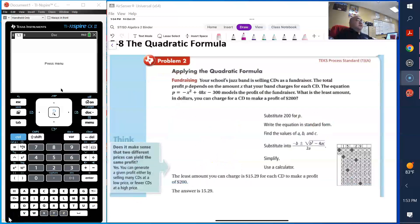Applying the quadratic formula. Your school's jazz band is selling CDs as a fundraiser. The total profit depends on the amount x that your band charges for your CD. The equation p equals negative x squared plus 48x minus 300 models the profit of the fundraiser. What is the least amount in dollars you can charge for a CD to make a profit of $200?